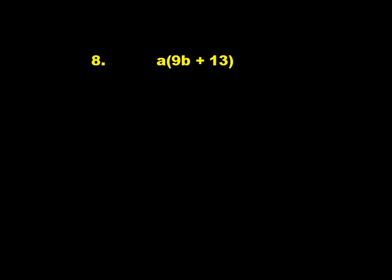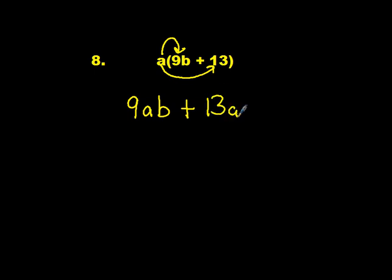Number 8: a times (9b plus 13). Pause the video and come back when you are ready. First, take a and multiply it times 9b — we get 9ab. Plus a times 13 which is 13a. Our answer is 9ab plus 13a.